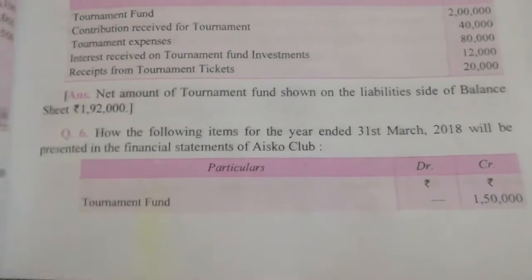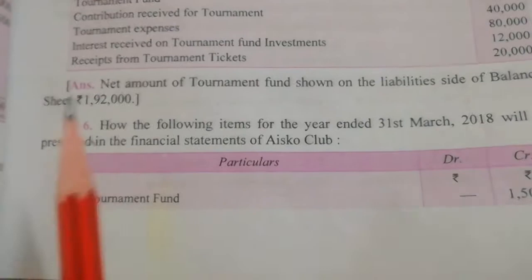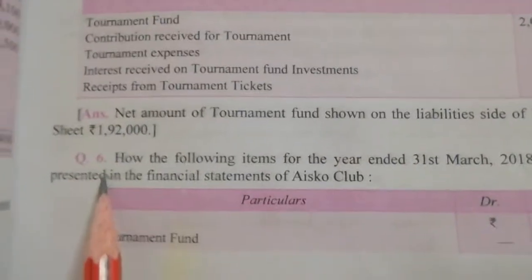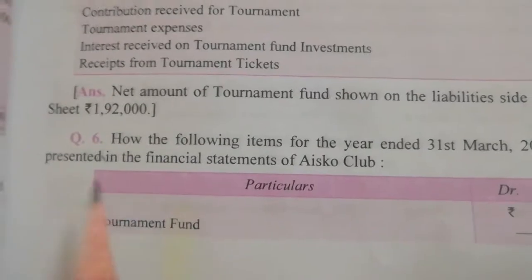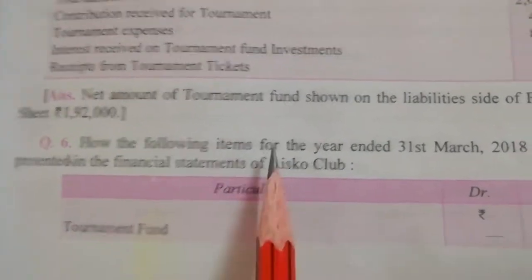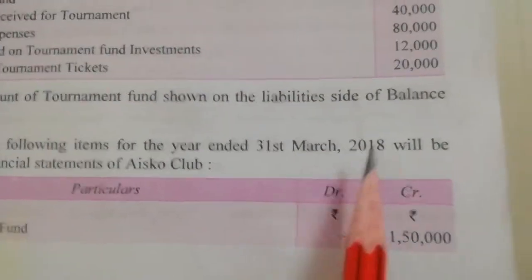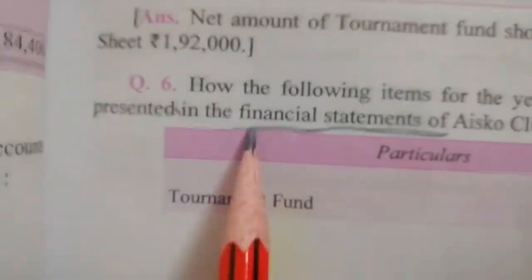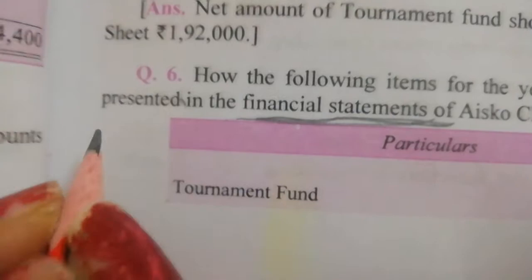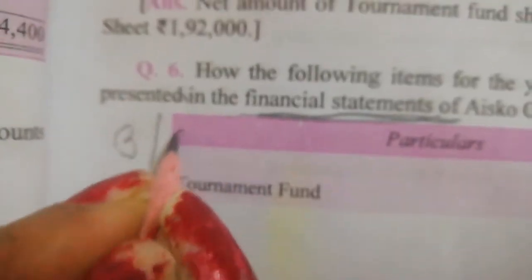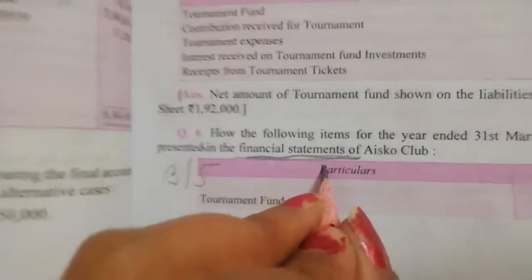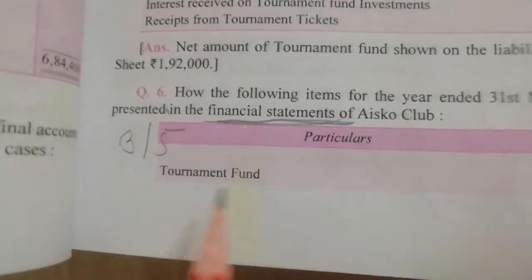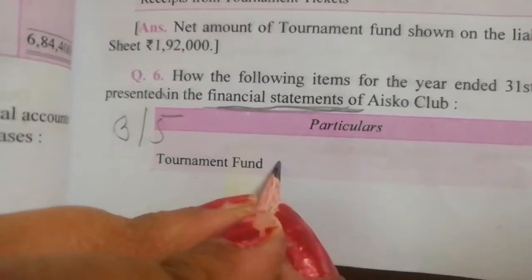Good morning class, let's see question number 6. After completing question number 4, now let us go for question number 6. In question number 6, what the question is saying: how the following items for the year ending 31st March 2018 will be presented in the final account — that means you have to make the balance sheet. It is the same as you had solved in question number 4 or 5.